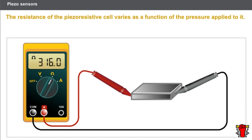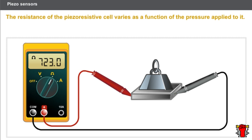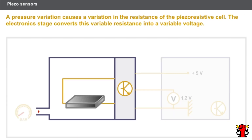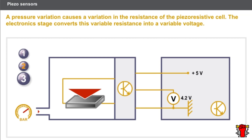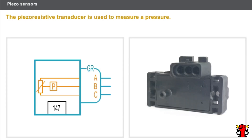The piezoresistive transducer employs another form of the piezoelectric effect. The resistance of the piezoresistive cell varies as a function of the pressure applied to it. The piezoresistive transducer consists of a piezoresistive cell and an electronic stage. It is powered by the computer. A pressure variation causes a variation in the resistance of the piezoresistive cell, and the electronic stage converts this variable resistance into a variable voltage.